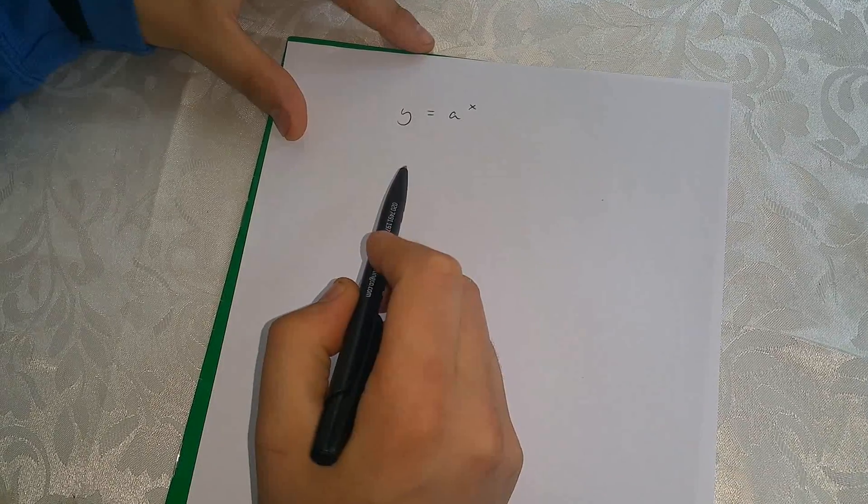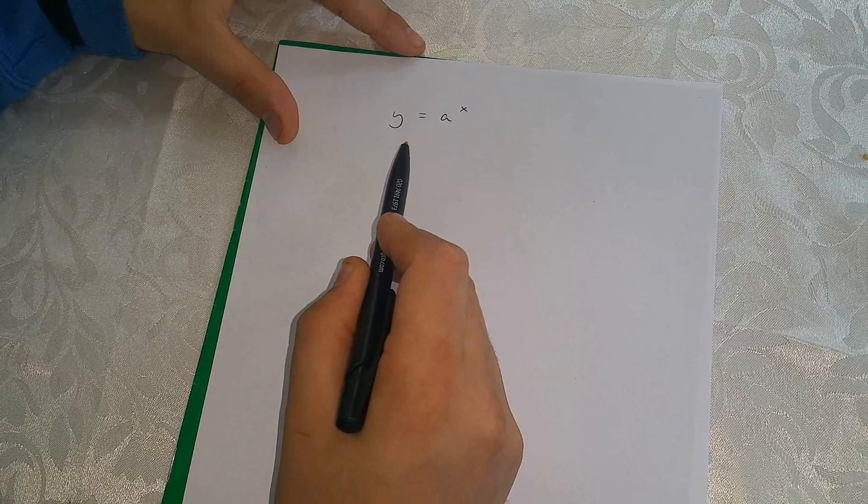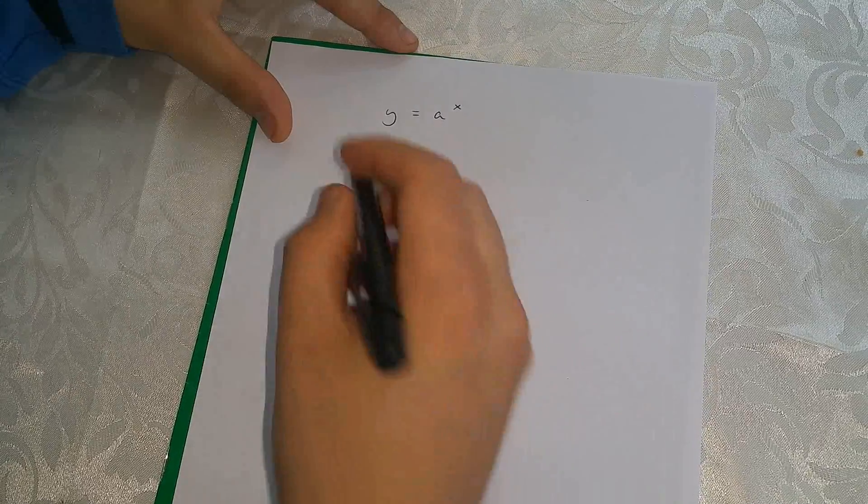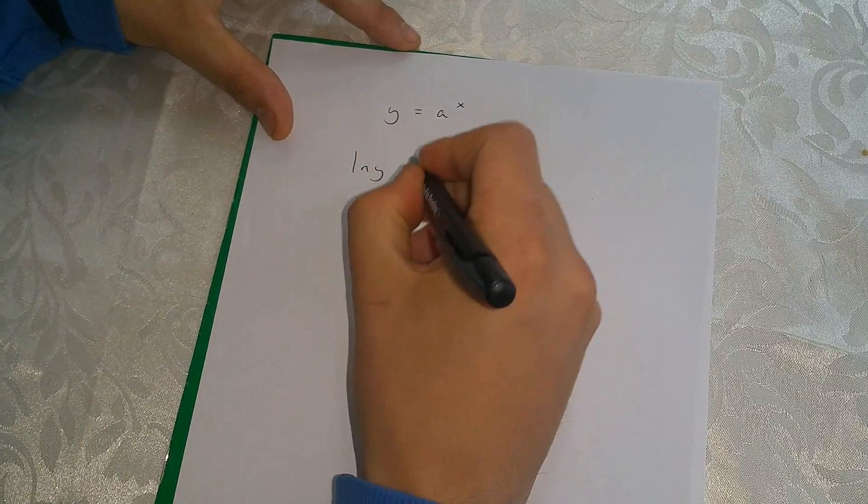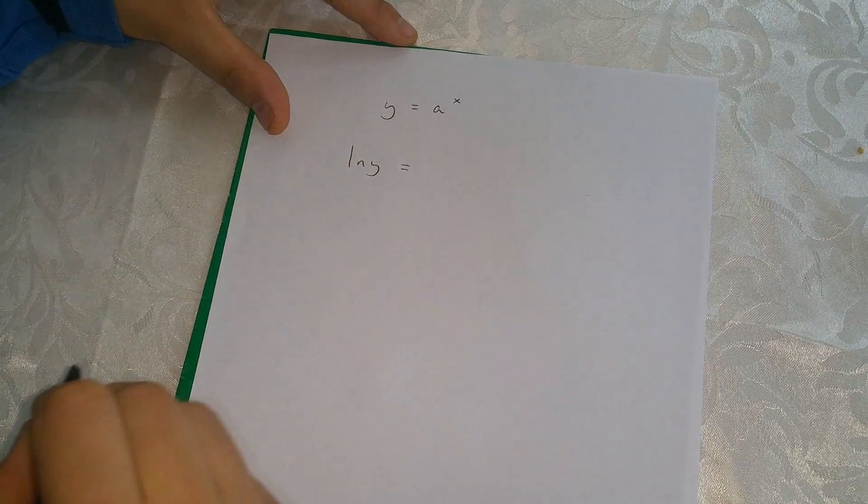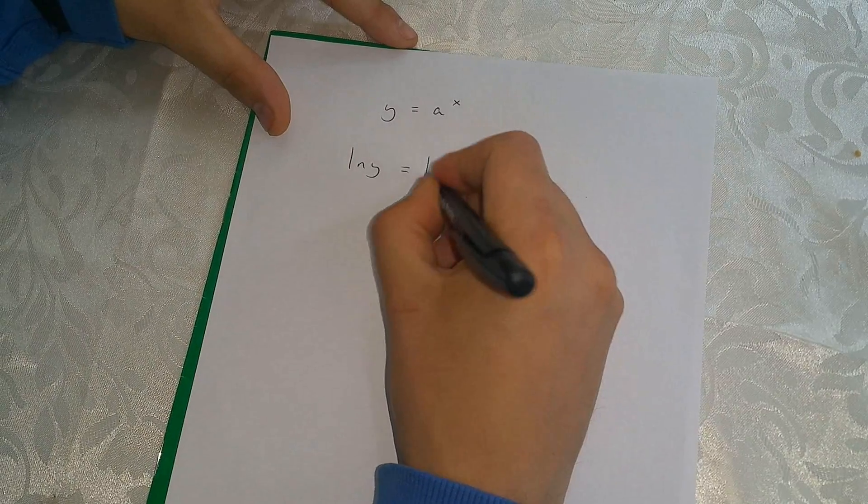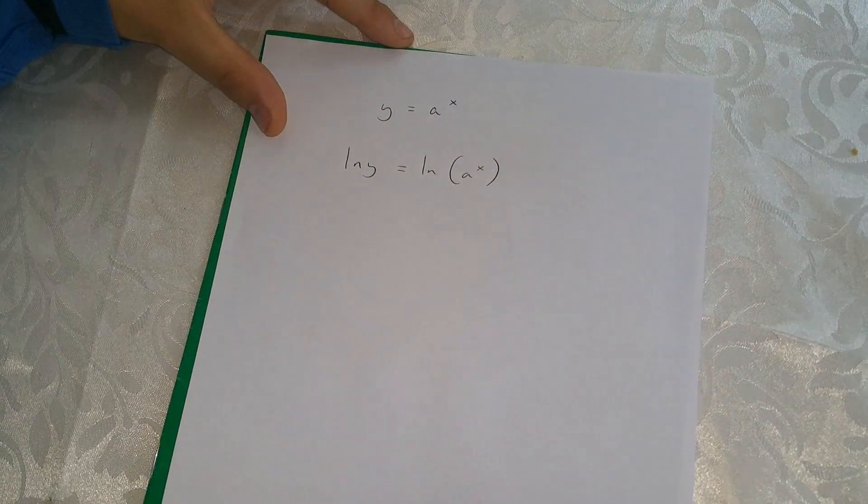Now, to do this, let's take the natural logarithm of both sides of this equation. If we do this, we end up with ln y equals ln a to the power of x.